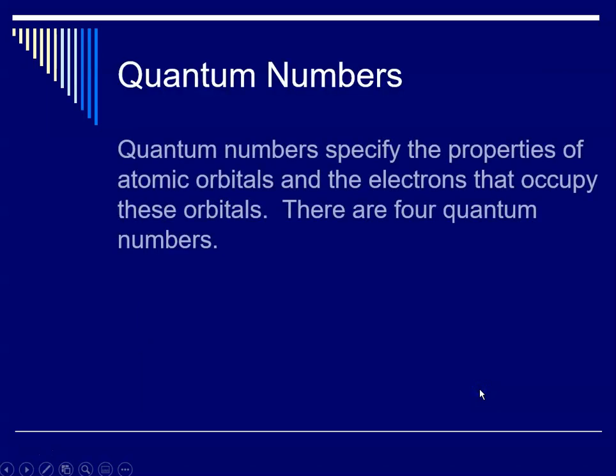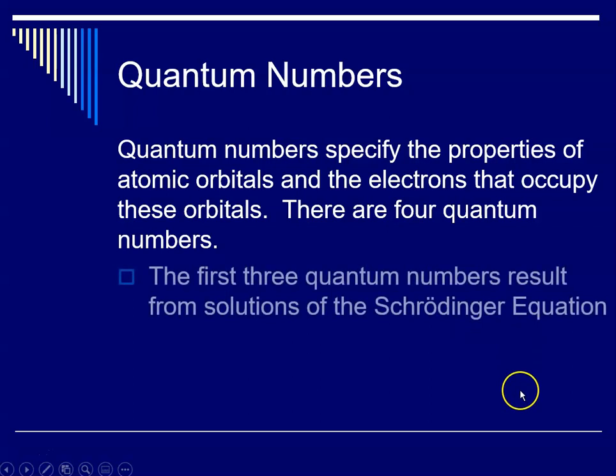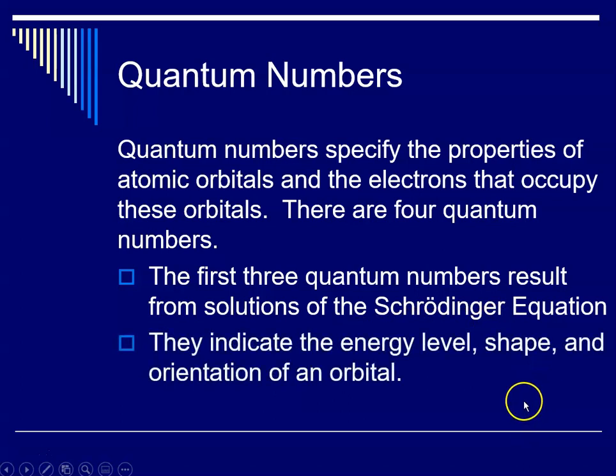The quantum numbers specify the properties of the atomic orbitals and the electrons that occupy these orbitals. There are four quantum numbers. The first three quantum numbers are direct results from the Schrödinger equation and they indicate the energy level, the shape, and the orientation of the orbitals.